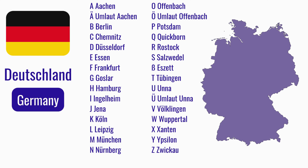A wie Aachen. Ä wie Umlaut Aachen. B wie Berlin. C wie Chemnitz. D wie Düsseldorf. E wie Essen. F wie Frankfurt. G wie Goslar. H wie Hamburg. I wie Ingelheim. J wie Jena. K wie Köln. L wie Leipzig. M wie München.